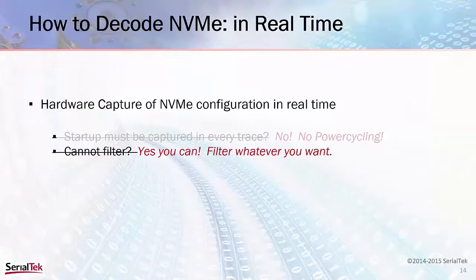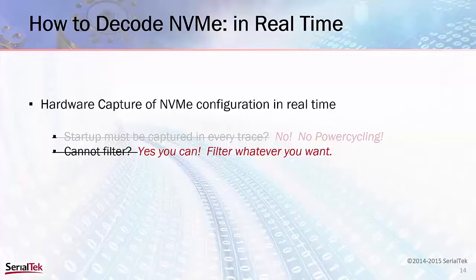Can we filter? Absolutely. The hardware archive is independent of the rest of the analyzer, independent of the buffer. So you can filter, you can trigger, you can do whatever you want and not have to worry about whether or not you'll be able to decode the NVMe afterwards. You may filter out lots of the NVMe, but the NVMe that remains will be decoded accurately.